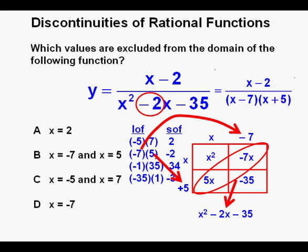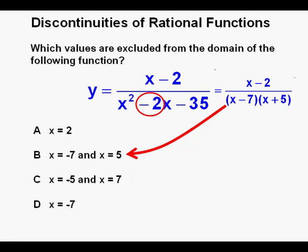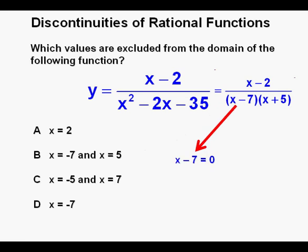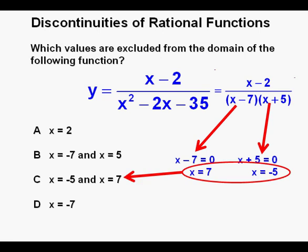We rewrite the function as y equals x minus 2 over quantity x minus 7 times quantity x plus 5. Error alert: we need to solve the denominator for 0, giving us x minus 7 equals 0 and x plus 5 equals 0. Solving gives x equals 7 and x equals negative 5. We must take factoring to the final step — x equals 7 and x equals negative 5 are the excluded values.